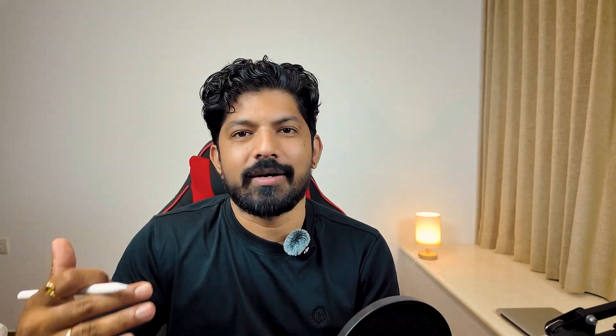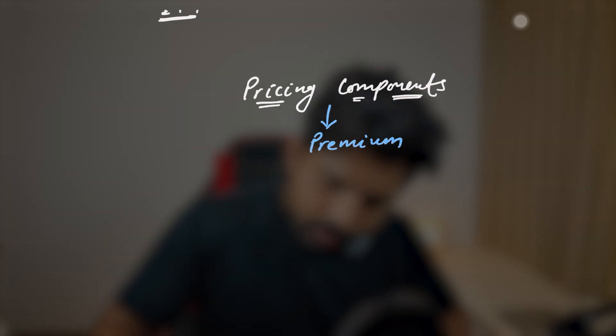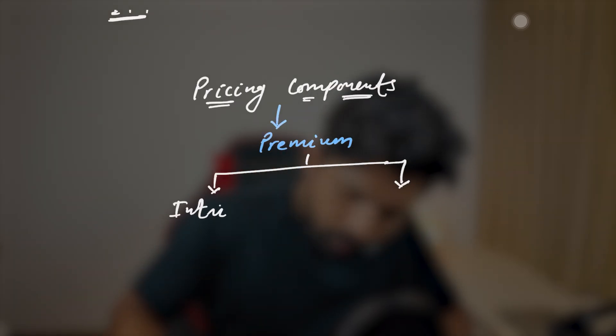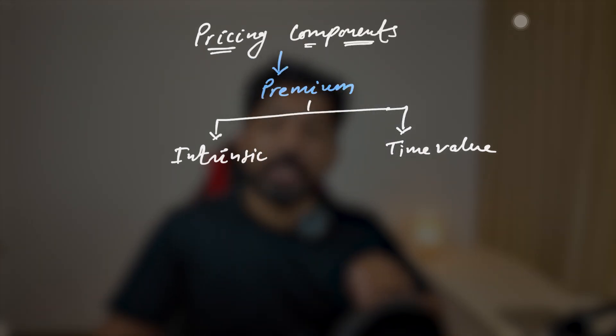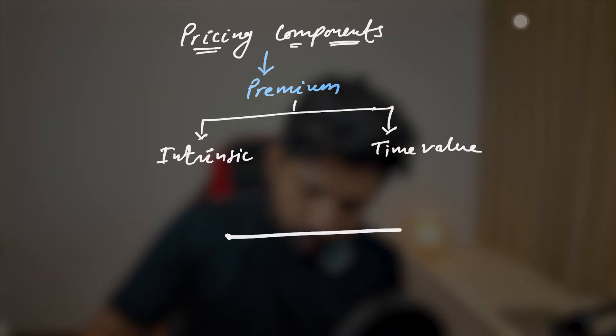Now let's learn about the pricing components. When we buy any option we pay a price known as the premium. The premium has two components: intrinsic value and time value. Let's understand these one by one for the call option and the put option. Don't be scared by these terms — intrinsic value and time value are based on very real-life examples.